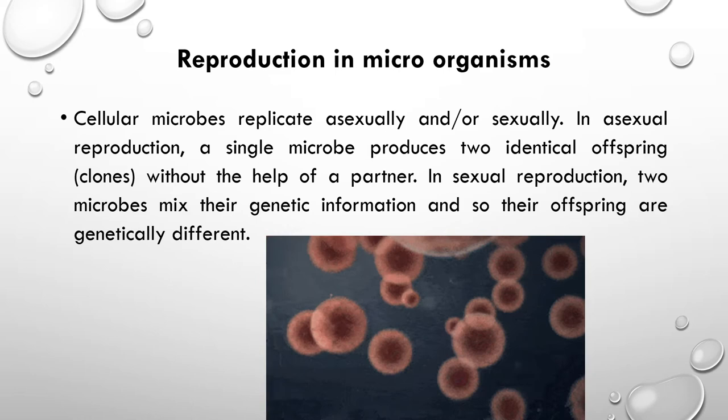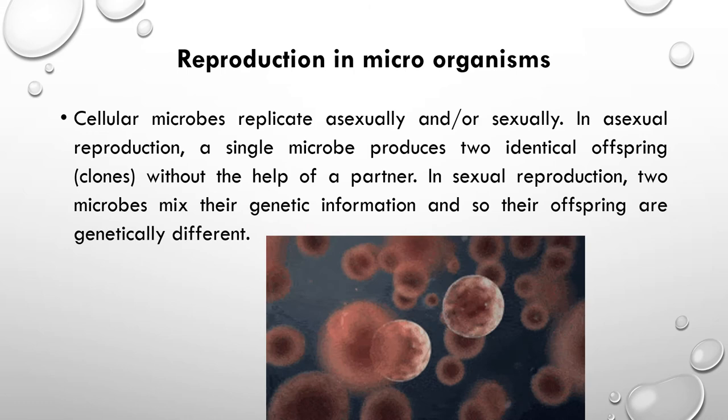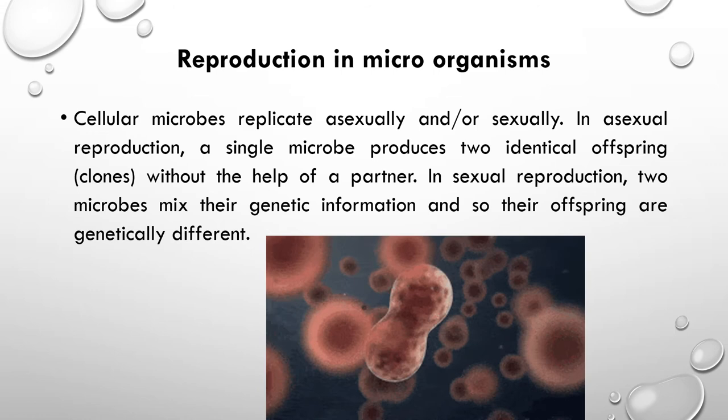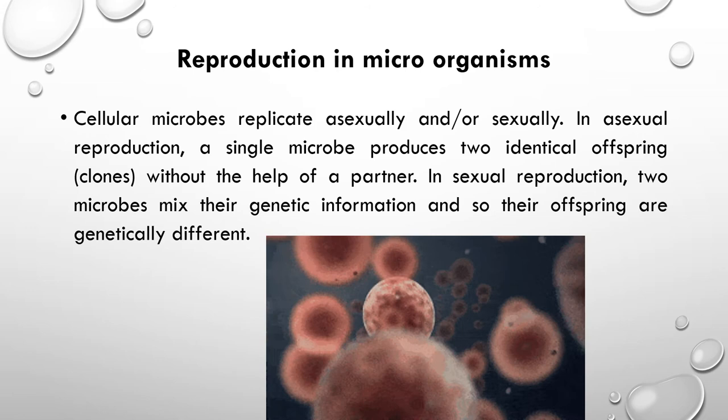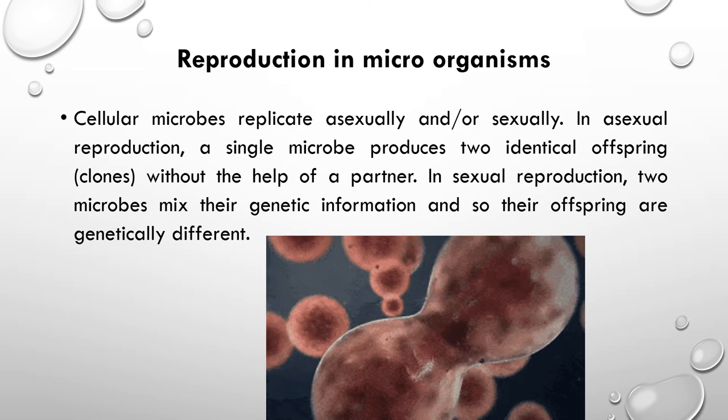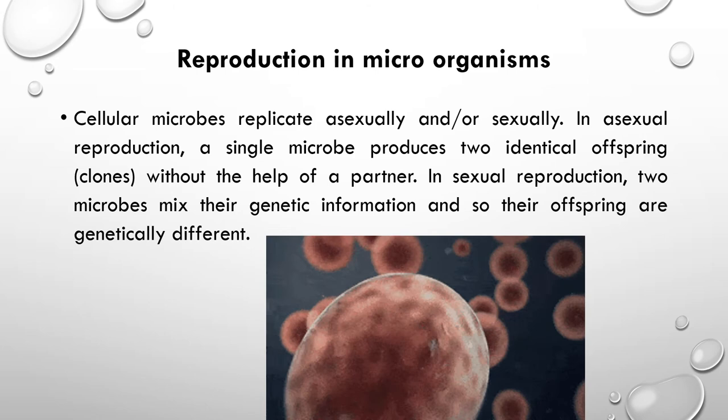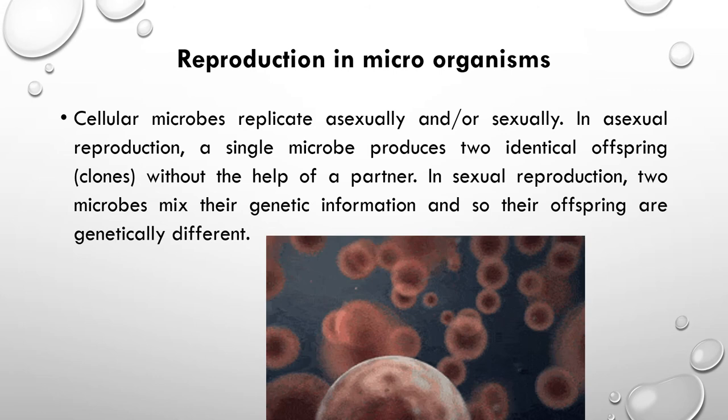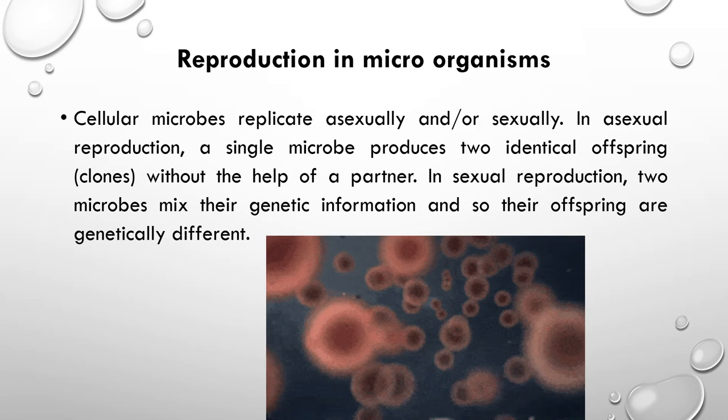This short video clip shows how microorganisms reproduce asexually by binary fission. If you consider the sexual reproduction of microorganisms, the genetic materials of two microbes of the same species mix together to form genetically different new microorganisms. This is how microorganisms perform reproduction.